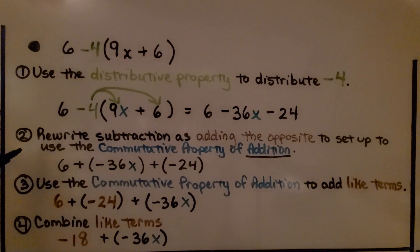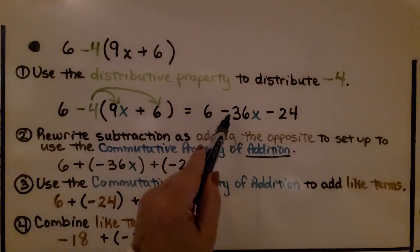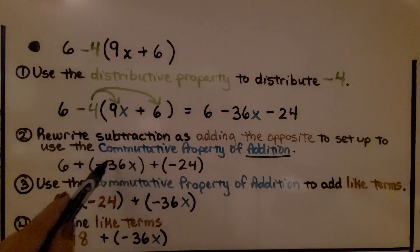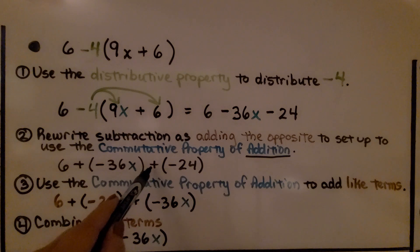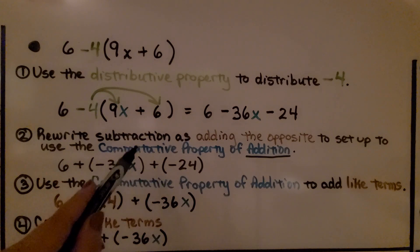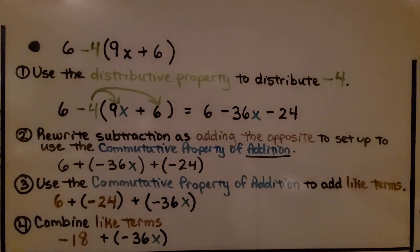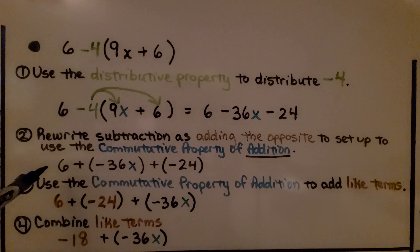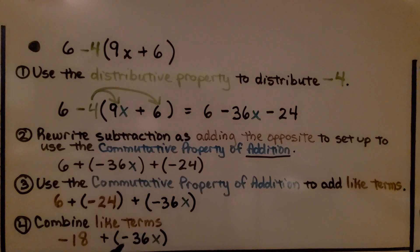Now we rewrite the subtraction as adding the opposite to set up to use the commutative property of addition. Instead of 6 minus negative 36, we write 6 plus negative 36 in parentheses, and instead of minus 24, we write plus negative 24. Adding the opposite helps us use the commutative property, because the commutative property does not work for subtraction. Now we can add like terms: 6 and negative 24. We add 6 plus negative 24 to get negative 18, and we're adding a negative 36x.